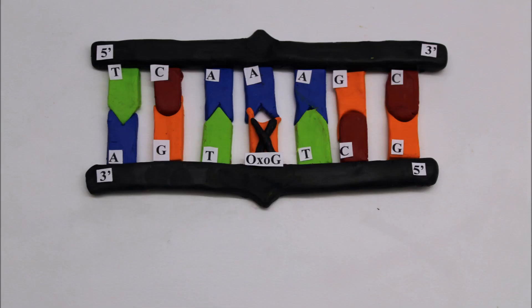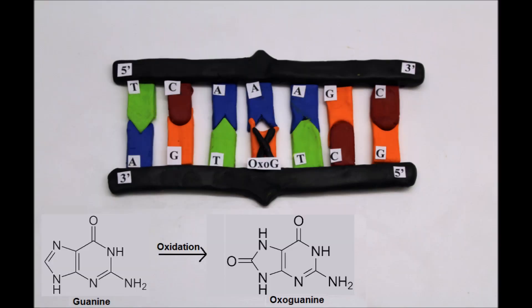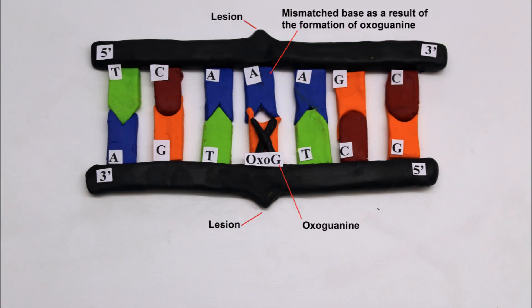When looking at DNA, oxidation of guanine is one of the most common types of damage that can occur. This results from DNA's interaction with reactive oxygen species, potentially resulting from something such as exposure to ionizing radiation. This causes the formation of oxoguanine, and consequently results in lesions on the DNA strand and a mismatched base pair.